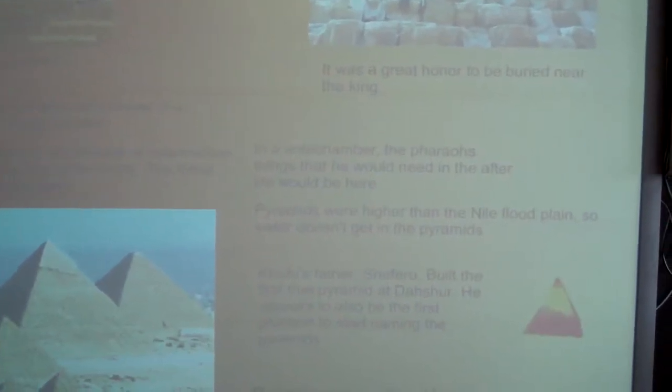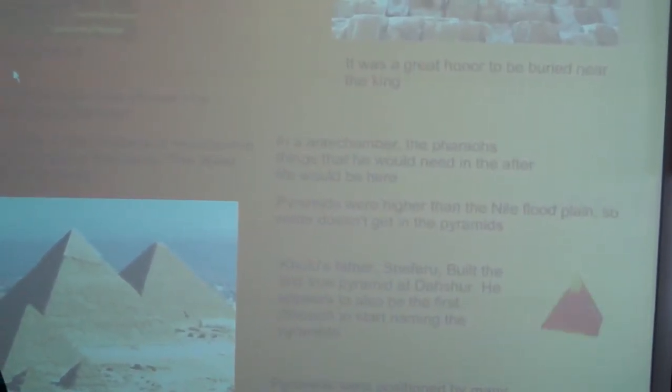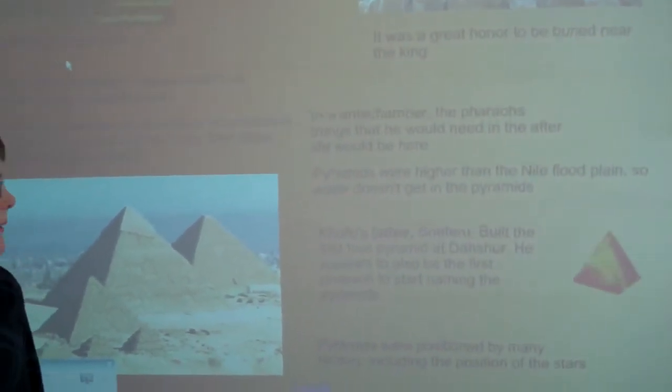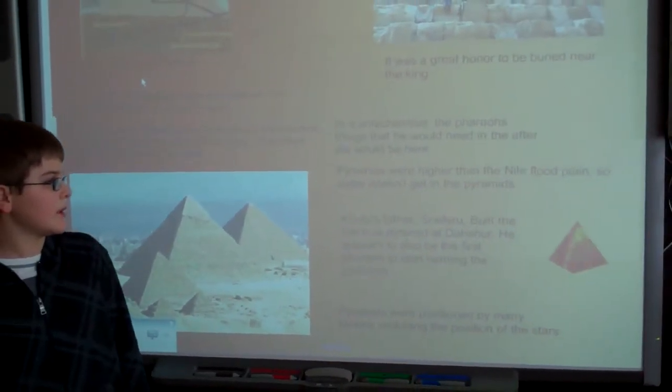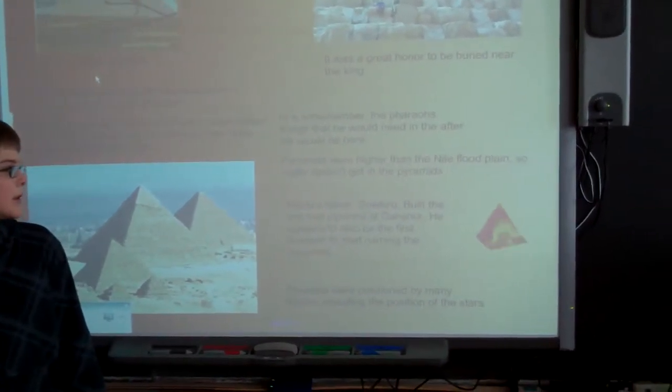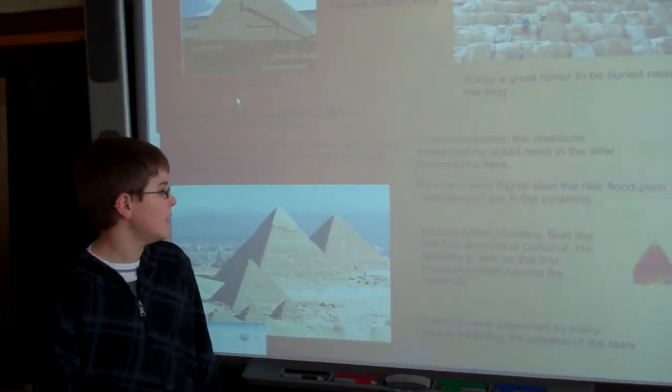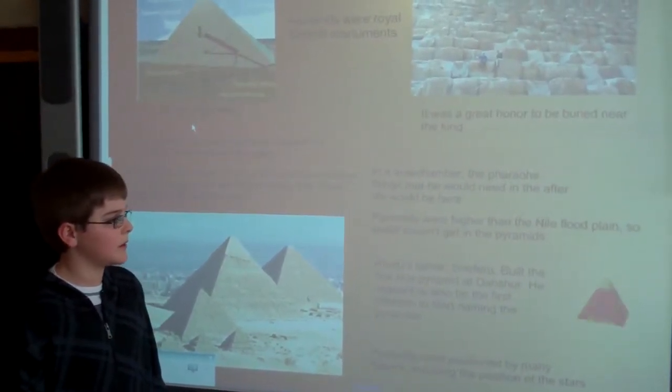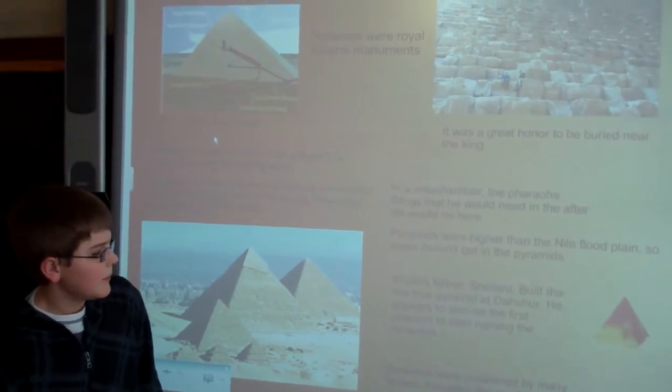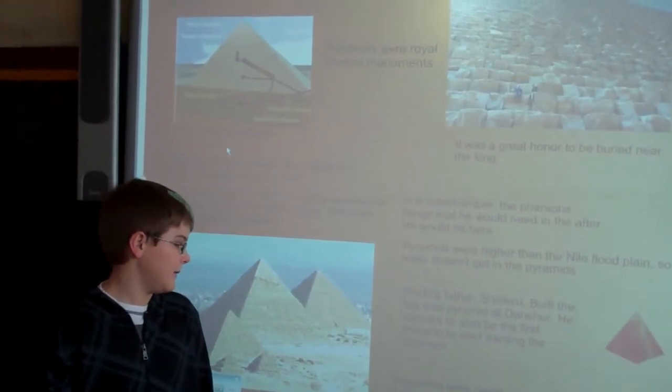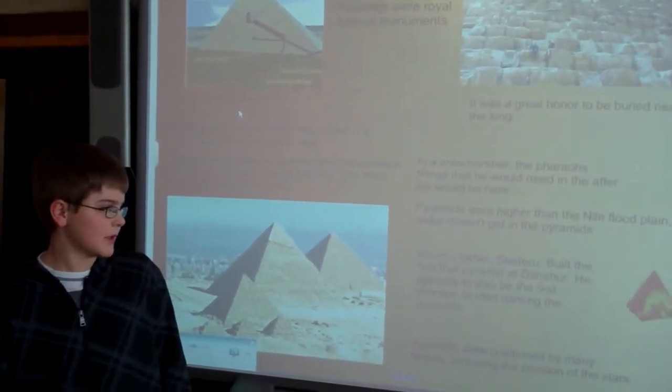Pyramids were higher than the Nile flood plains, so water doesn't get in the pyramids. Khufu's father's nephew built the first true pyramid at Dasher. He appears to also be the first pharaoh to start naming the pyramids. Pyramids were positioned by many factors, including the position of the stars.